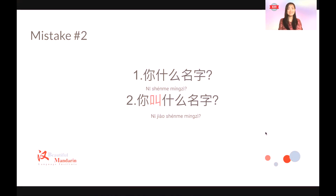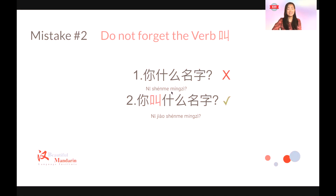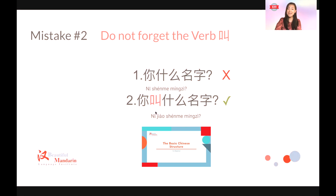The second mistake. Let's see which one is right. First one: 你什么名字? Second one: 你叫什么名字? Obviously, the second one is correct. So this mistake is: do not forget the verb 叫. I've heard a lot of people ask a name with 你什么名字 — they want to say "what's your name" but do not forget: 你叫什么名字? 叫 is the verb here. The structure is subject — verb — object.